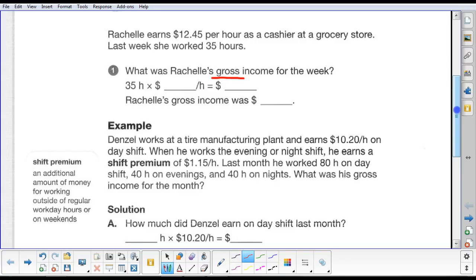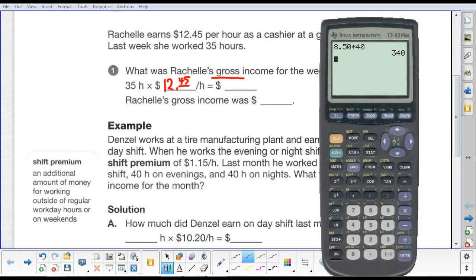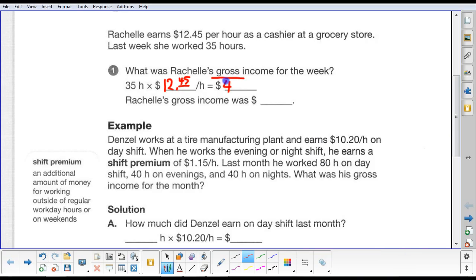Okay, so we just take 35 hours per week times $12.45 per hour. And Rachel made, let's take our calculator, we've got 35, let's multiply that by $12.45. And in that week, Rachel made $435.75. So Rachel's gross income was $435.75.